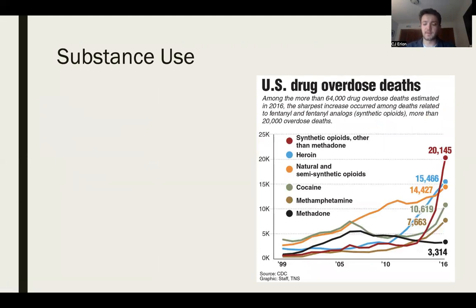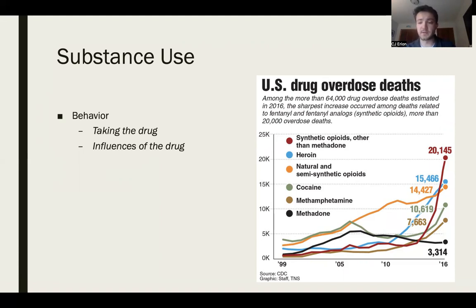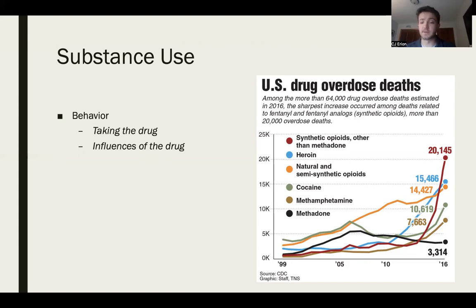Another behavior that has a large impact on health is substance use. Substance use can be thought of as a behavior in a couple of ways. One way is the act of taking the drug — that's a behavior in itself, and especially consistent drug use can have a large impact on our physical and mental health. Additionally, taking the drug can influence future behaviors, since the feeling that a drug brings can influence things like risky behaviors, which obviously also have a large impact on health and mortality rates.